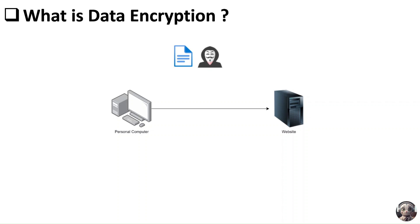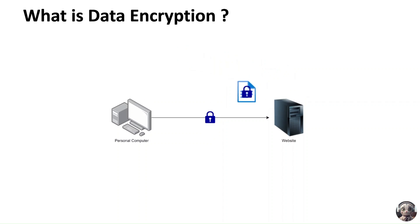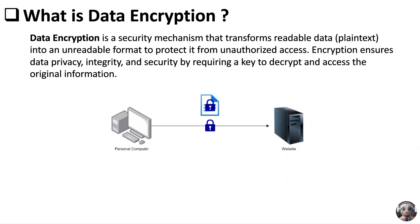To prevent this from happening, the system encrypts the communication channel and the data being sent to the website. This means that your information can only be read by the website. Even if a hacker intercepts the data, they won't be able to read it. This way, you can safely submit sensitive information on an online form with full privacy. Now, as we have understood the concept of data encryption, let us look at the definition.